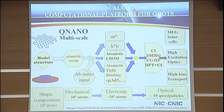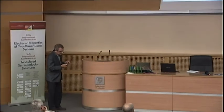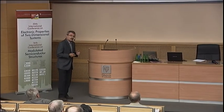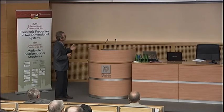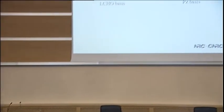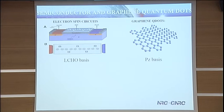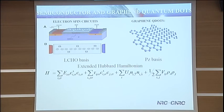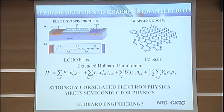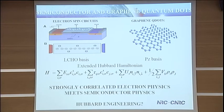I will mainly talk about physics with my fingers. An interesting avenue we are pursuing is the analogy between being able to localize electrons in gated structures and truly atomistic structures like quantum dots. Both can be described by some form of a Hubbard model. Strongly correlated electron physics meets semiconductor physics, and we can think of something like Hubbard engineering. There is a very large community in strongly correlated physics that has many fantastic ideas.